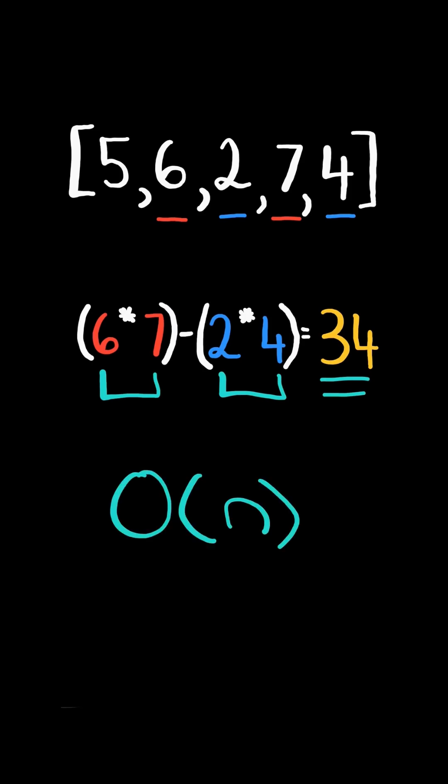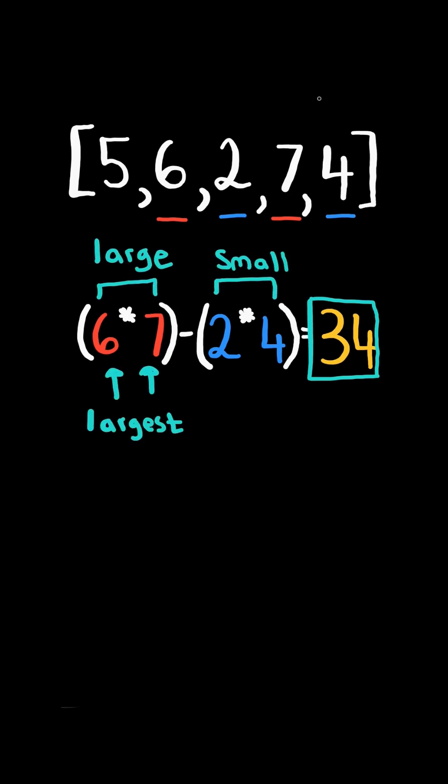We will solve this in O of n time. In order to get the maximized result, we need to find two of the largest numbers and two of the smallest numbers.